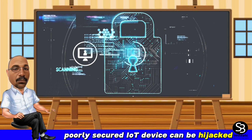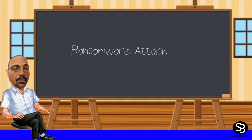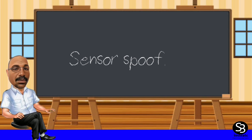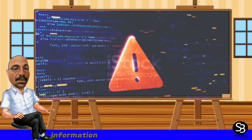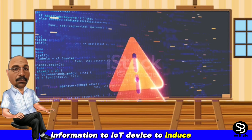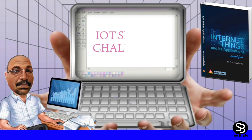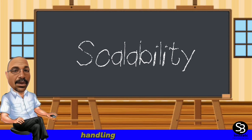Unauthorized access: Poorly secured IoT devices can be hijacked. Ransomware attacks: Blocking IoT devices until a ransom is paid. Sensor spoofing: Providing false information to IoT devices to induce malfunctions.